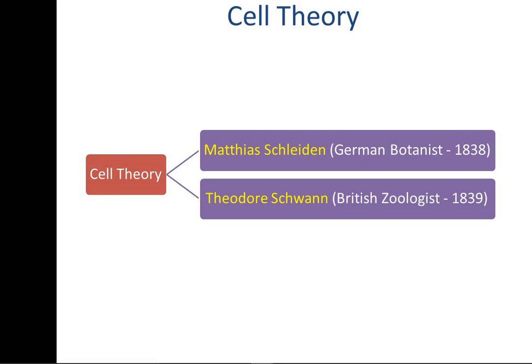These two independently proposed the cell theory. Their investigations were independent and separate, somewhere around the mid of the 19th century. You need to remember the year when they proposed the concepts of cell theory, and the names of the scientists.